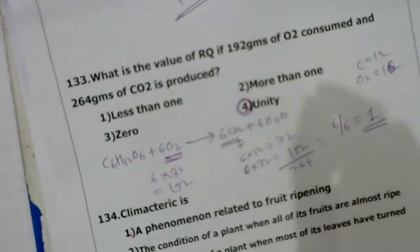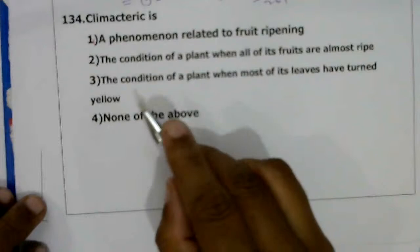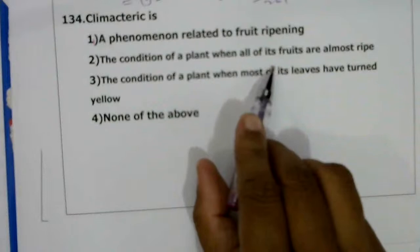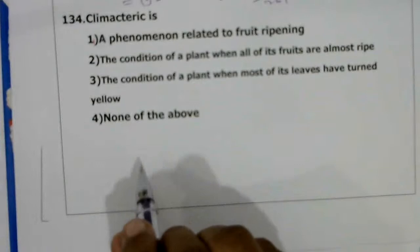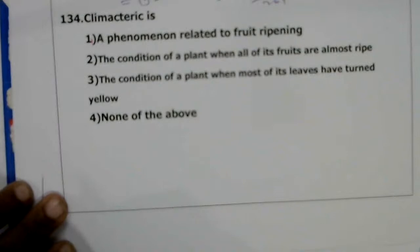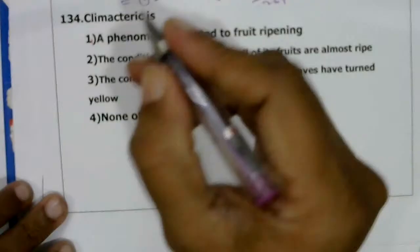Next question: climacteric is — a phenomenon related to fruit ripening, a condition when all fruits are almost ripe, a condition when most leaves have turned, or none of these? Climacteric is a sudden increase in the rate of respiration during fruit ripening. The correct answer is the first option — a phenomenon related to fruit ripening.